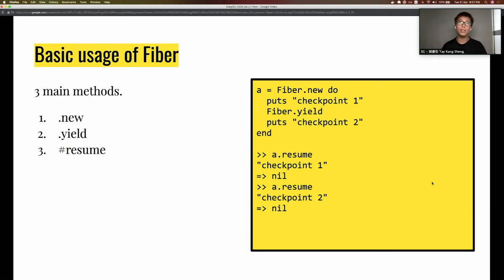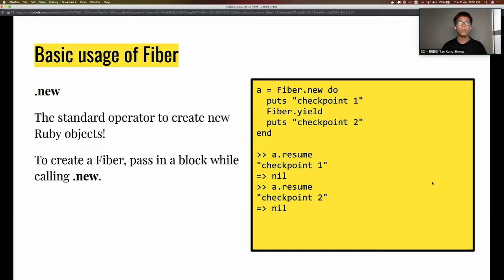First is new. New is the standard operator to create new Ruby objects, and Ruby is all about OOP. Likewise, Fiber requires you to instantiate an instance of Fiber in order to use it.